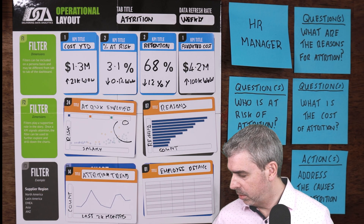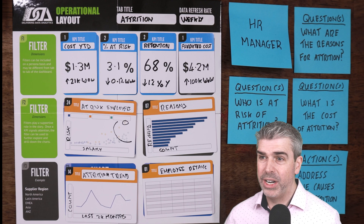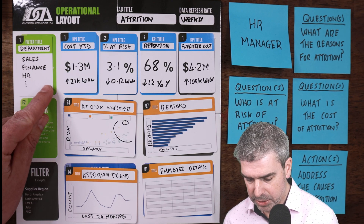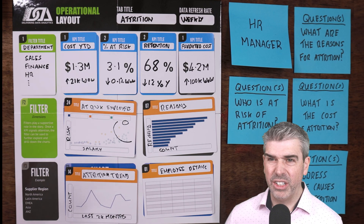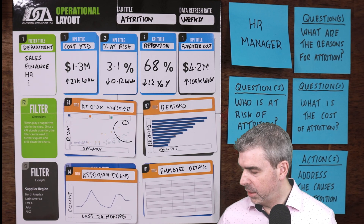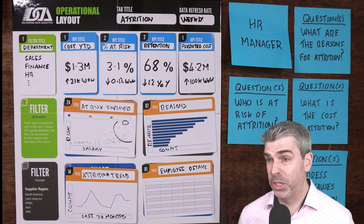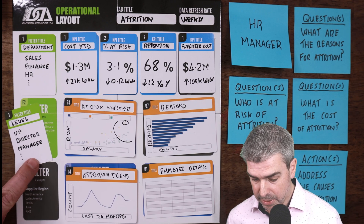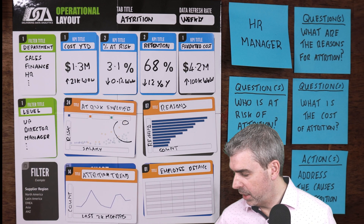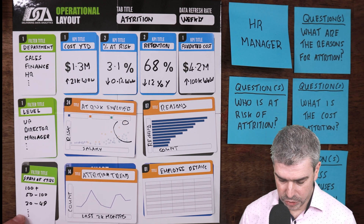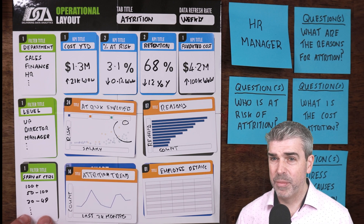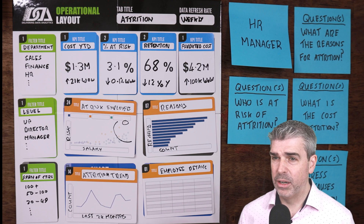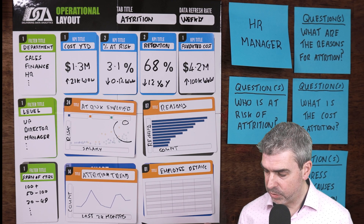Wrapping it up, we've got some filters that would be fairly typical for an HR manager — we'll be able to filter by department. You could argue that could also be a chart, but if you go with a chart you don't need the filter as well. It really depends on how it's going to be used. Also for HR, span of control is interesting — seeing if there are any trends or patterns based on the number of people under managers by different quantities.